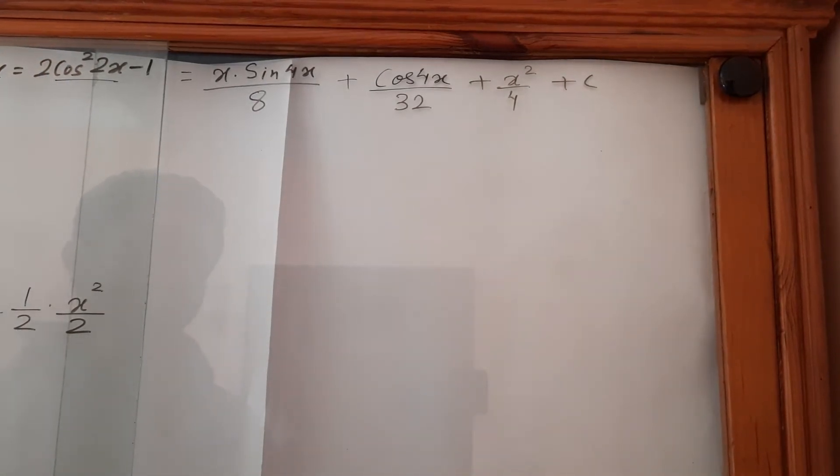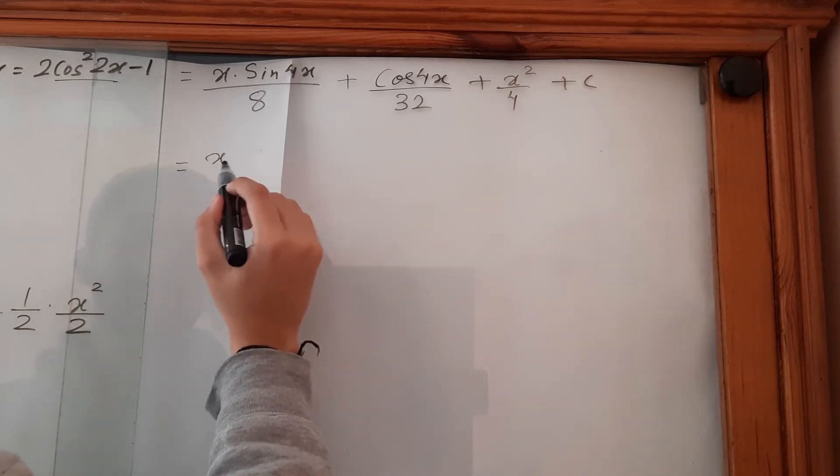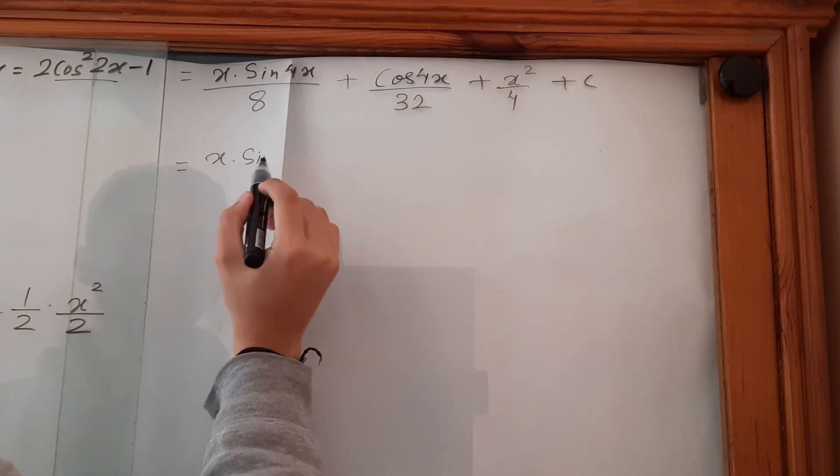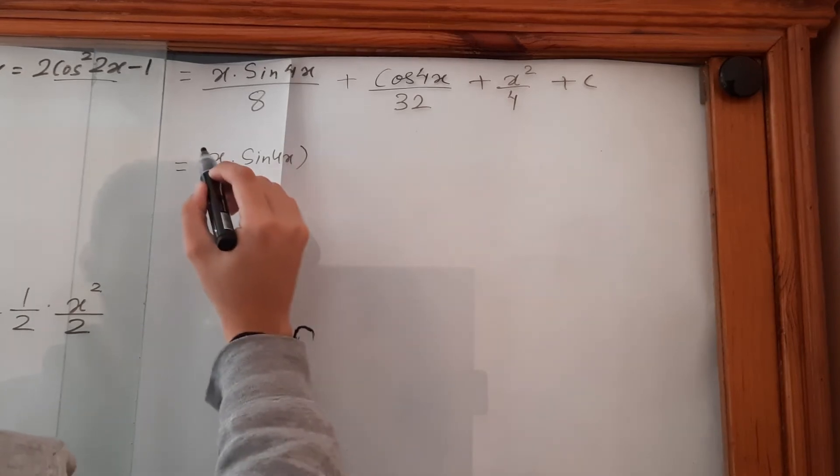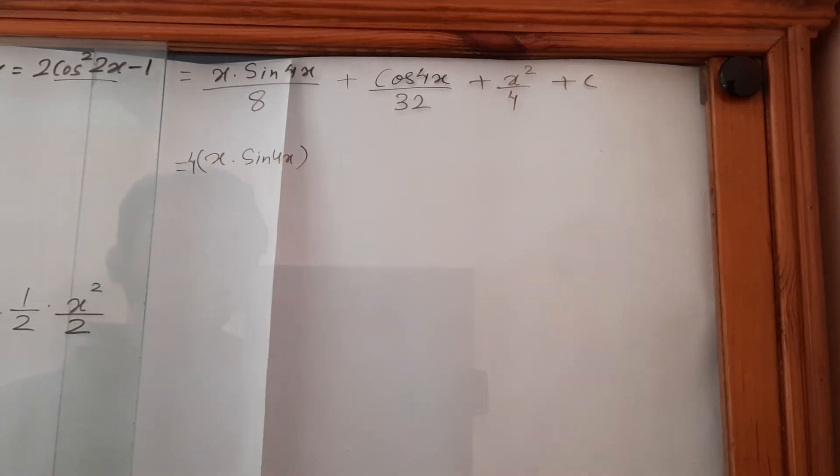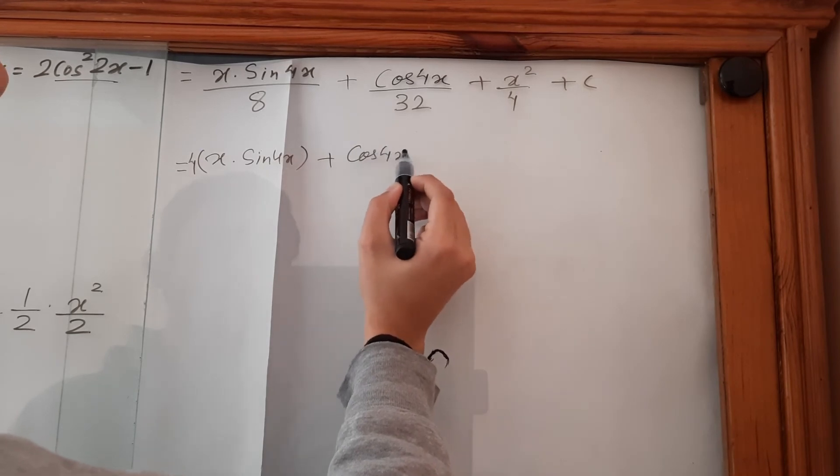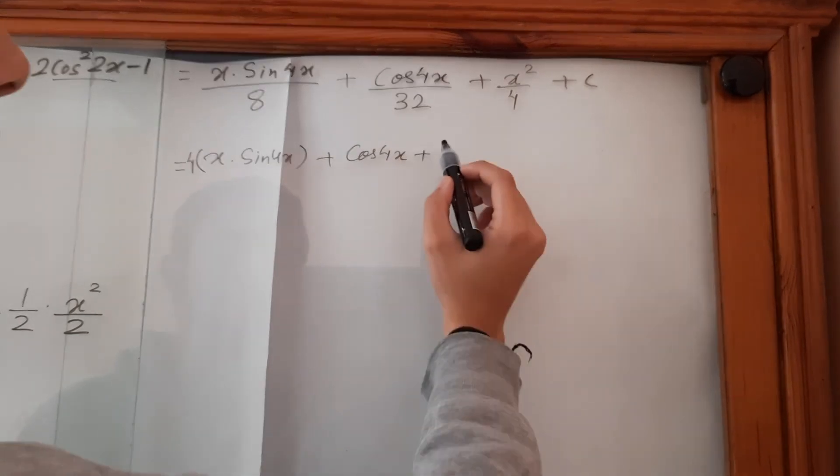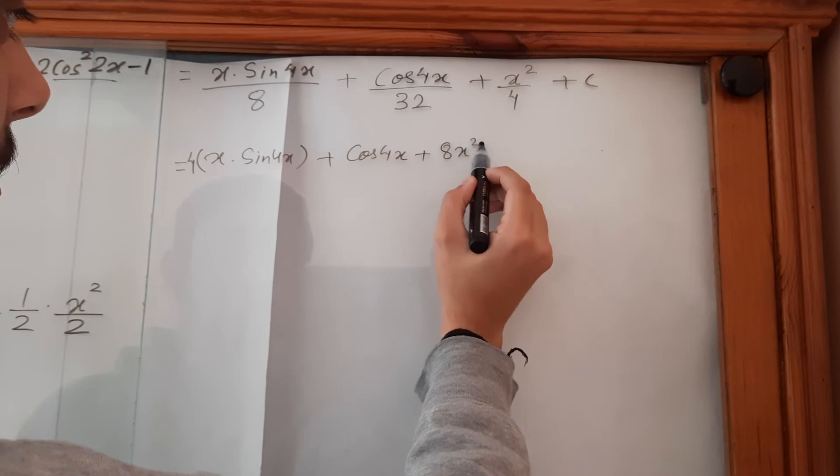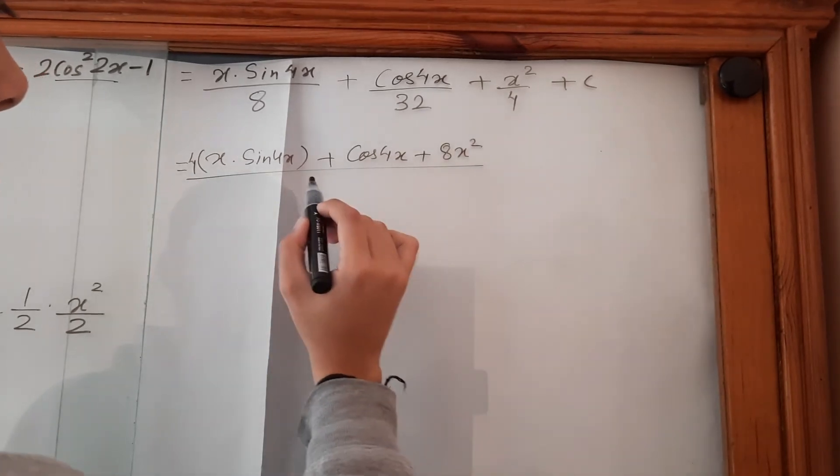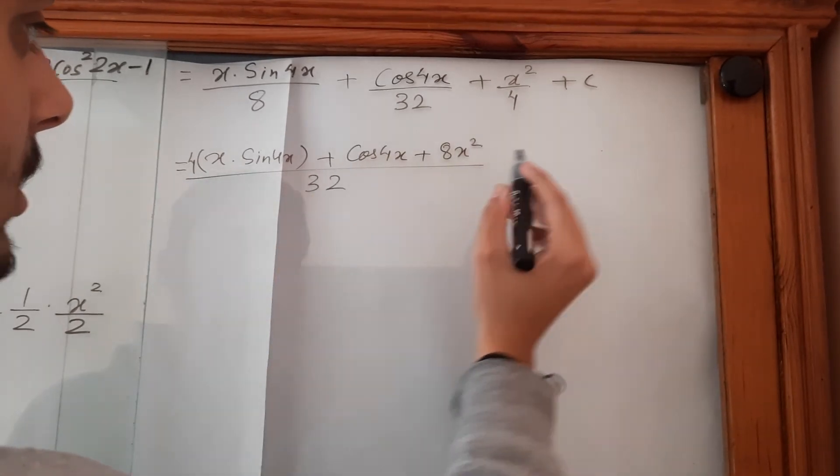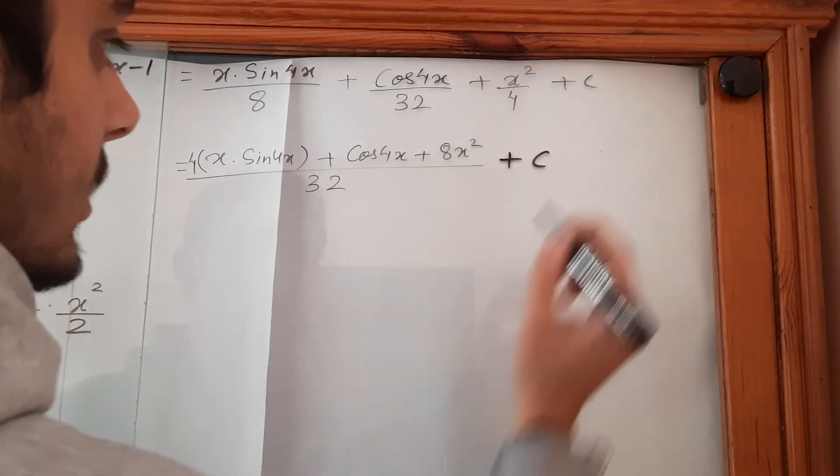We can take the LCM. So the final answer is [4x·sin(4x) + cos(4x) + 8x²]/32 + C.